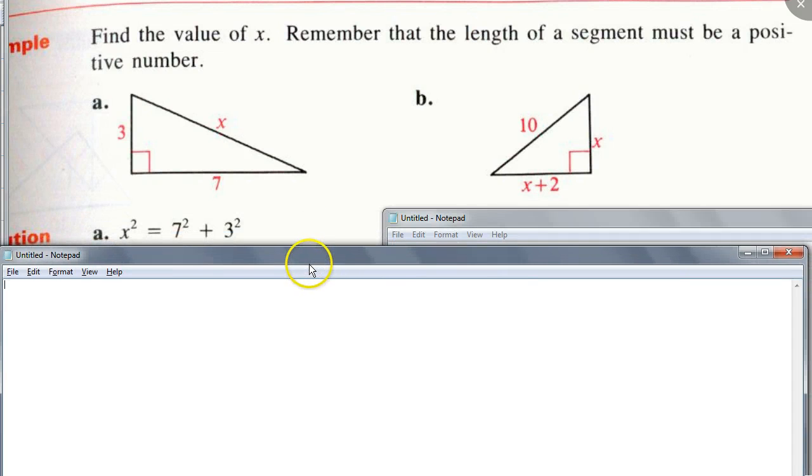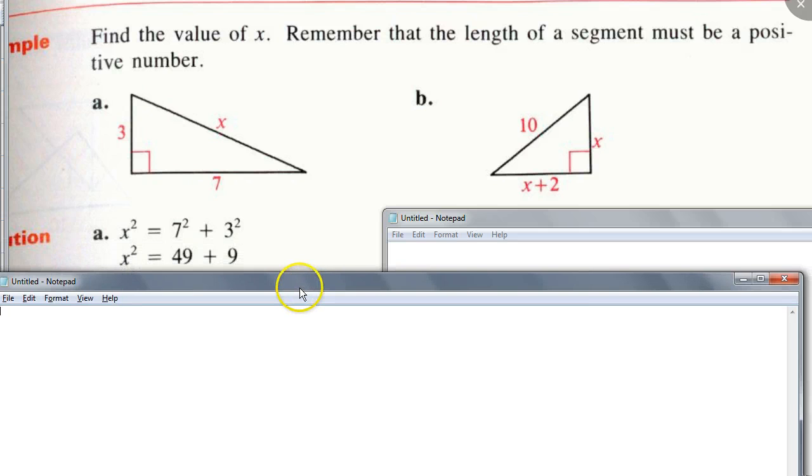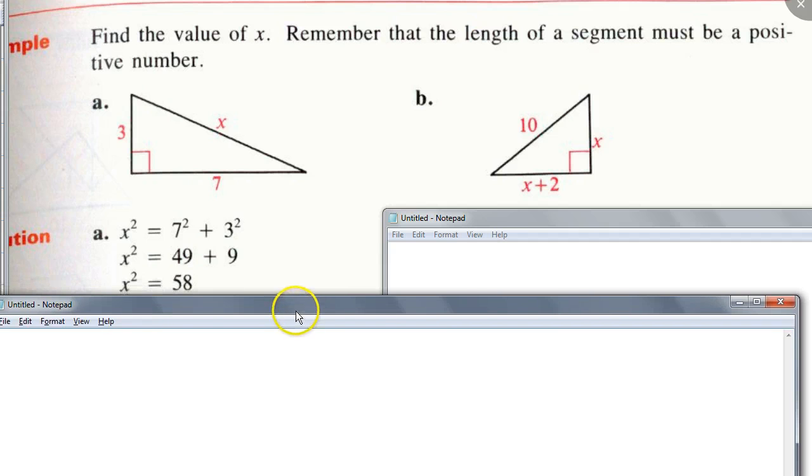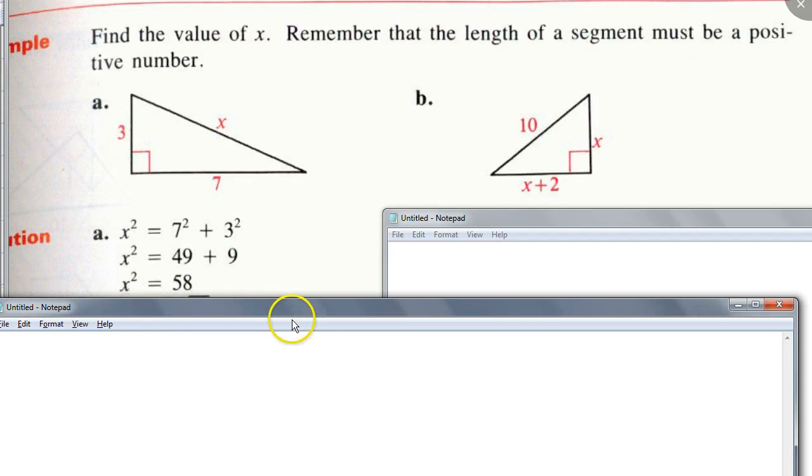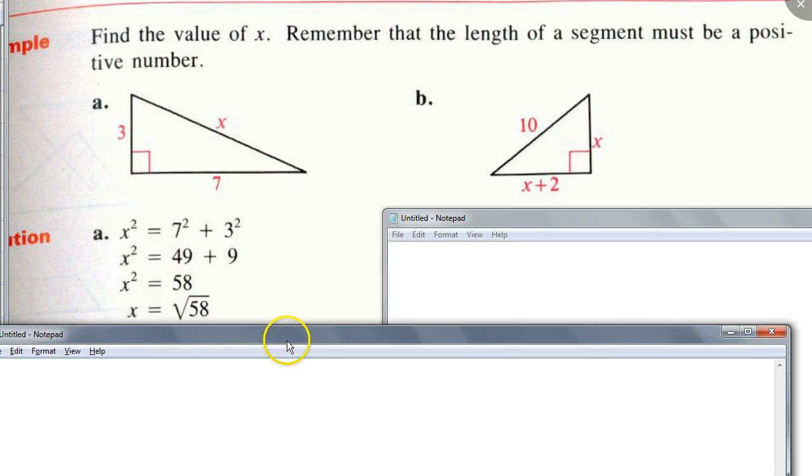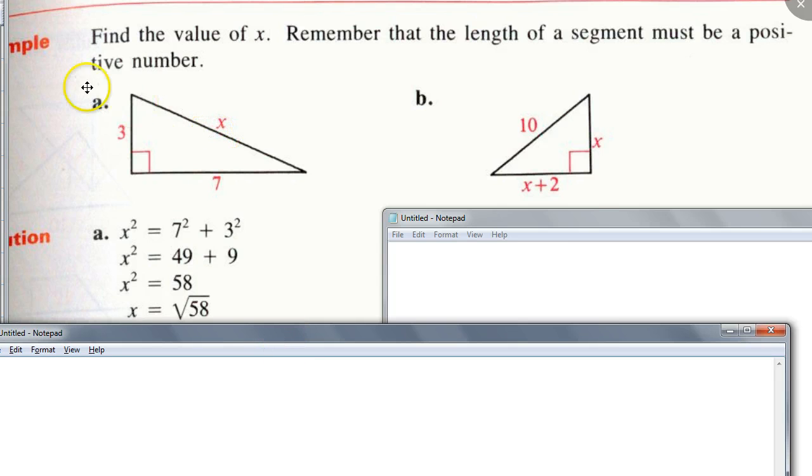And of course, when I do this, how many people got 49 plus 9 equals X squared? Good. And then you add them together, 58. Yeah. Square root both sides, right? Yes. Well, you get plus or minus 58, but do we need the negative part? No. No. Because X is, right? It's a, yeah, it's gotta be positive. It's a distance.